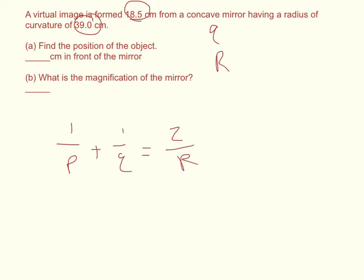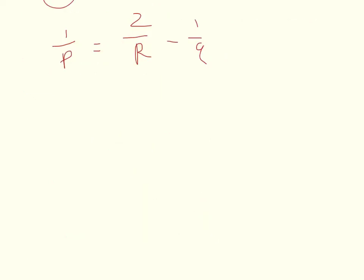And I want to find where the object was, so I want to isolate my term with the P in it. So 1 over P equals 2 over R minus 1 over Q. And then I'll find the common denominator for this side of the equation, so I'll multiply this side by Q over Q, and then I multiply this side by R over R. So that's basically multiplying by 1, so it doesn't change the value.